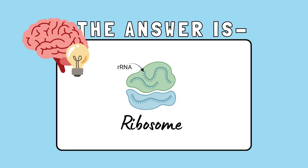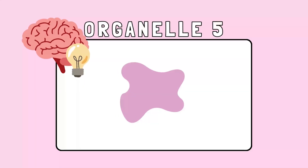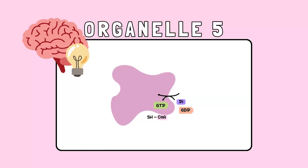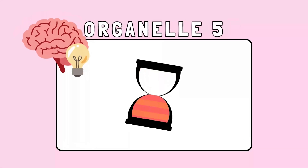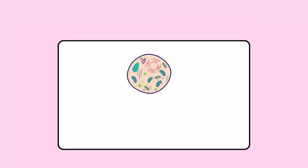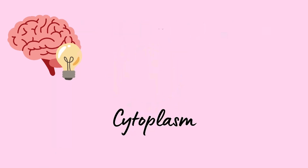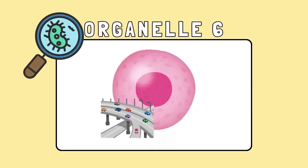This jelly-like substance fills the cell, holds organelles in place, and serves as the site of many metabolic reactions. The answer is cytoplasm — it keeps the organelles in place and supports all cellular activities.